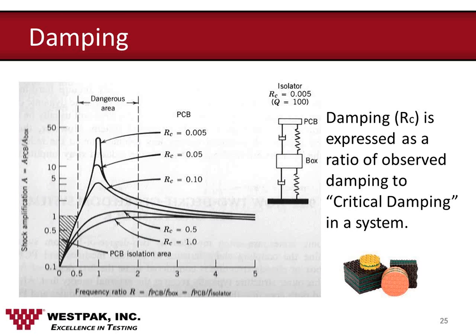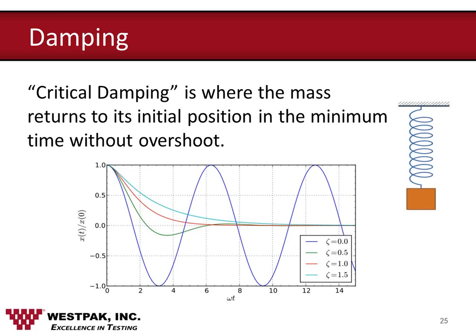Lightly damped systems tend to have higher amplification factors — what we called Q. You can see an example of Q on this particular plot. More highly damped systems tend to have a lower amplification level at resonance. Damping is normally indicated by a dashpot located between the mass and its foundation, parallel to the spring in the system. As you approach critical damping, where the ratio of actual damping to critical damping is one, you have virtually no oscillation of the mass at all — virtually no amplification.